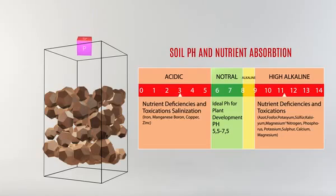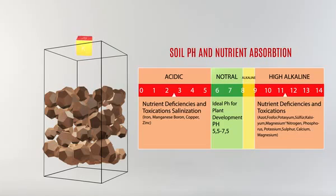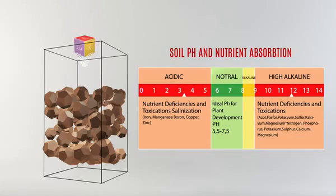In high acidity, absorption of nutrients such as nitrogen, phosphorus, potassium, sulfur and calcium diminishes. On the contrary, in high alkaline conditions, absorption of iron, manganese, boron, copper and zinc decreases. Humic acid buffers soil pH to 5.5 to 7.5 levels, which is ideal for plant development and nutrient absorption.